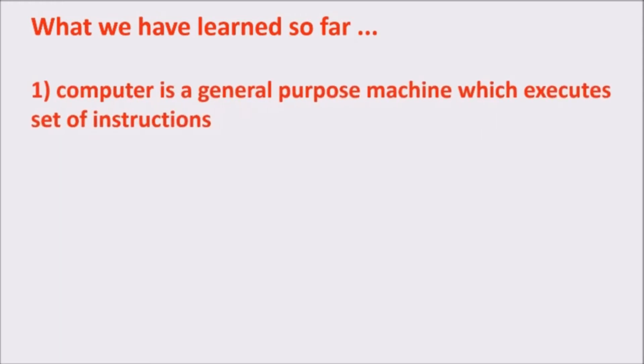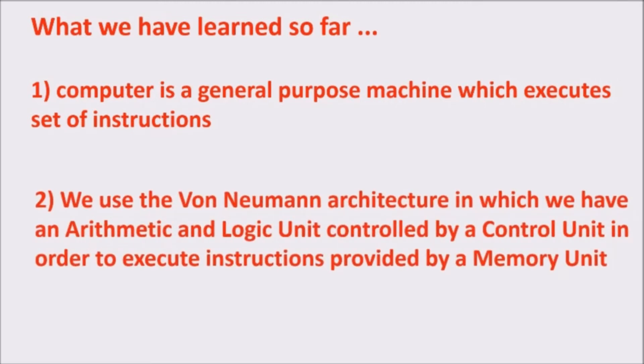So, what have we learned so far? First, computer is a general purpose machine which executes set of instructions. Second, we use the von Neumann architecture in which we have an arithmetic and logic unit controlled by a control unit in order to execute instructions provided by a memory unit.